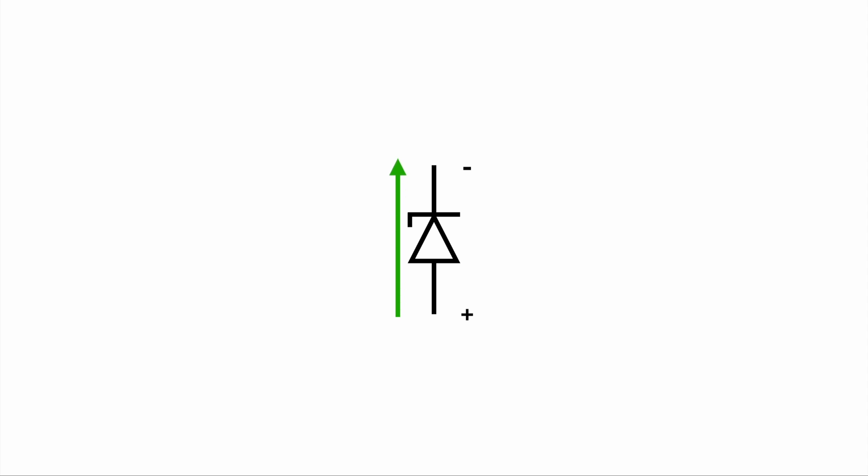In forward bias, electricity will be passed through the diode. In reverse bias, we are not allowing any current to flow through the diode. Actually that's not completely true. That's why I have an orange arrow here. There are certain circumstances when the Zener diode will allow the current to flow through even in reverse bias.